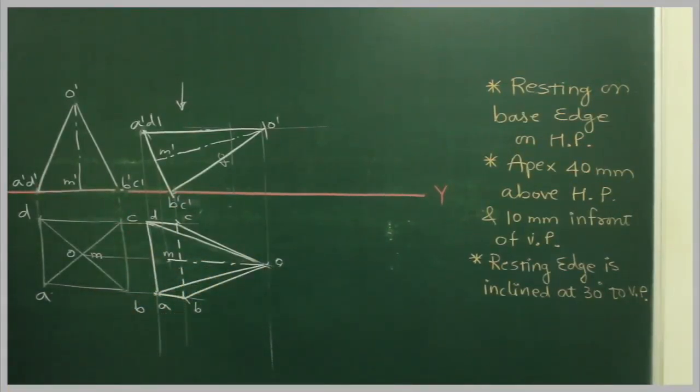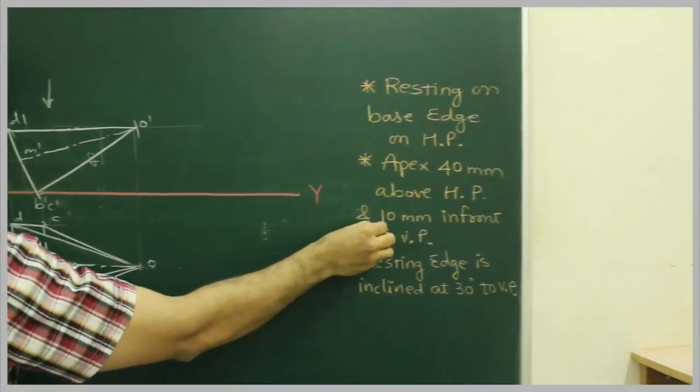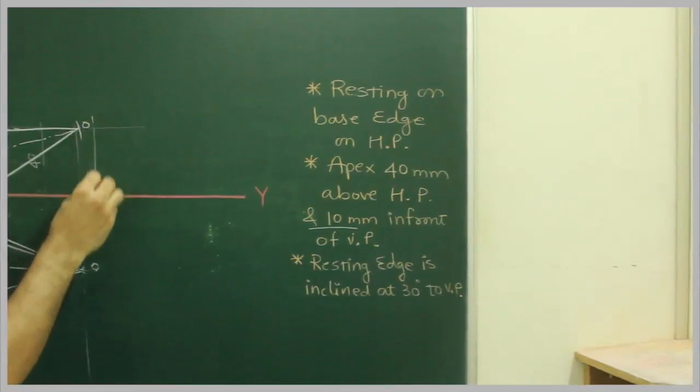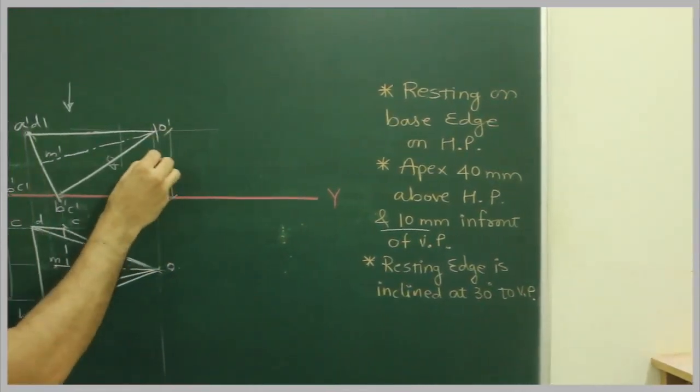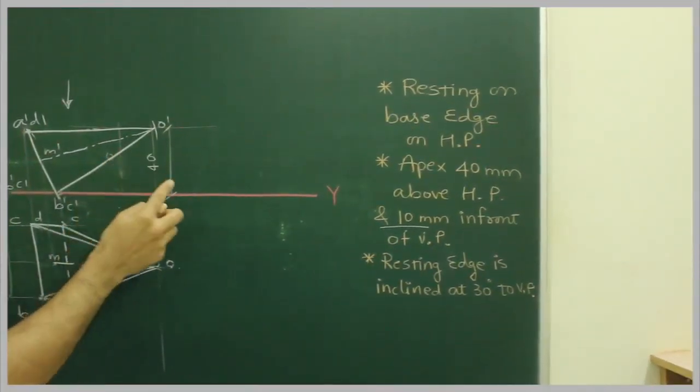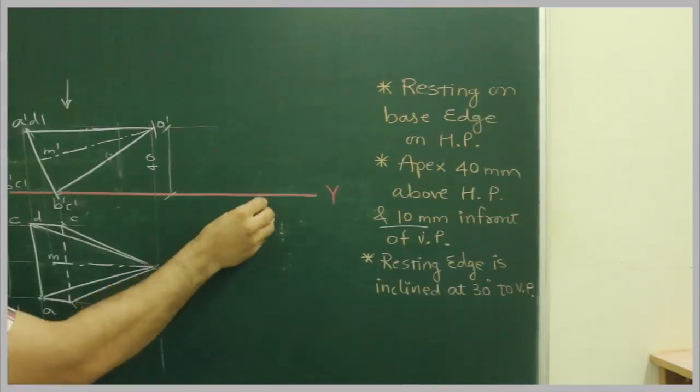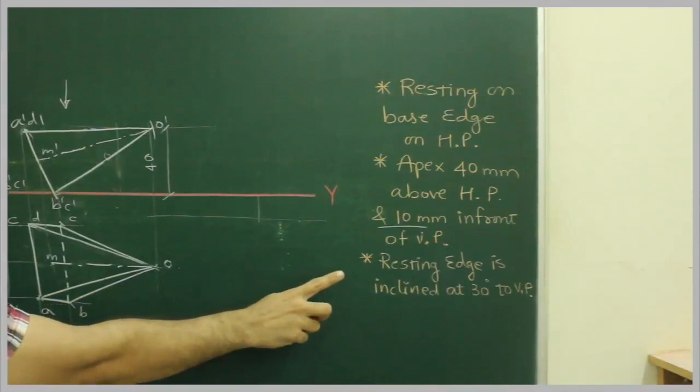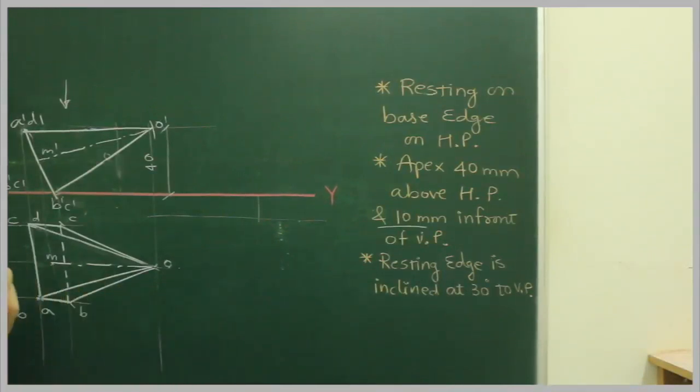Now after this, if you see that, the apex is 40mm above HP and 10mm in front of VP. If you see, this is 10mm in front of VP, so we have already taken 40, this is 40. Now we want the same apex 10mm in front of VP, that means we want here, and we want another condition also, that is, the resting edge is inclined at 30 degrees to VP.